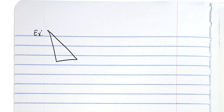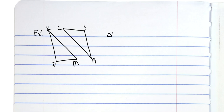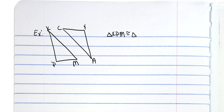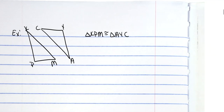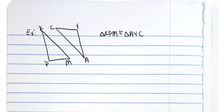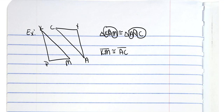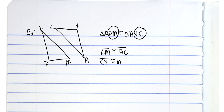Another example: we have triangle KPM and triangle CYA, and it tells you triangle KPM is congruent to triangle AYC. It wants you to find KM — KM is the first and last letters, so it goes with AC. Then find CY — CY are the last two letters of AYC, so the corresponding side is MP. And yes, you have to say MP — you cannot say PM. They have to be in the same order.